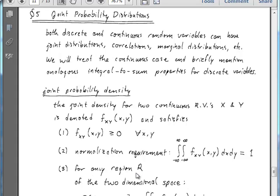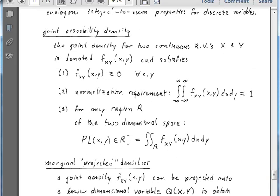Now, the third requirement is that for any region in space, the probability that I will be in that region is given by the integral over that region.